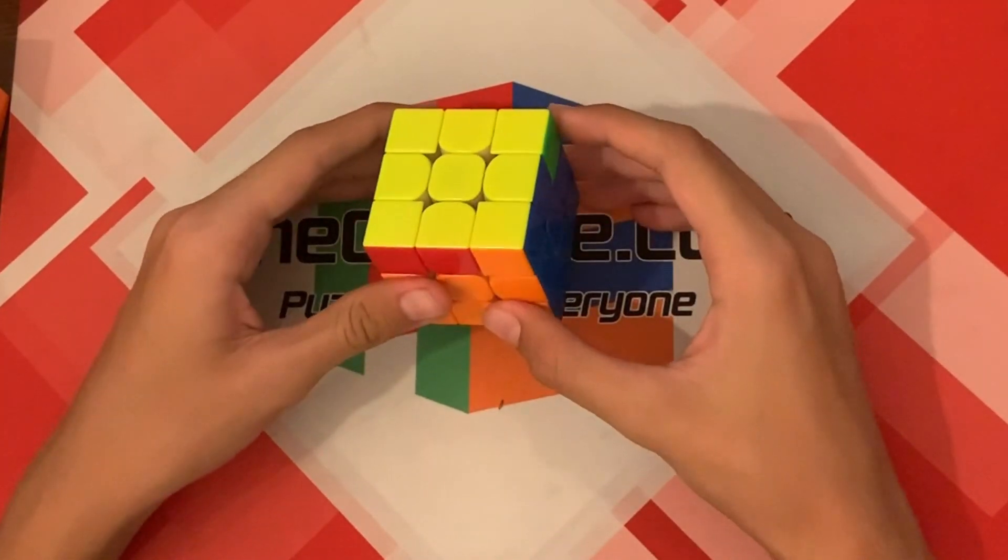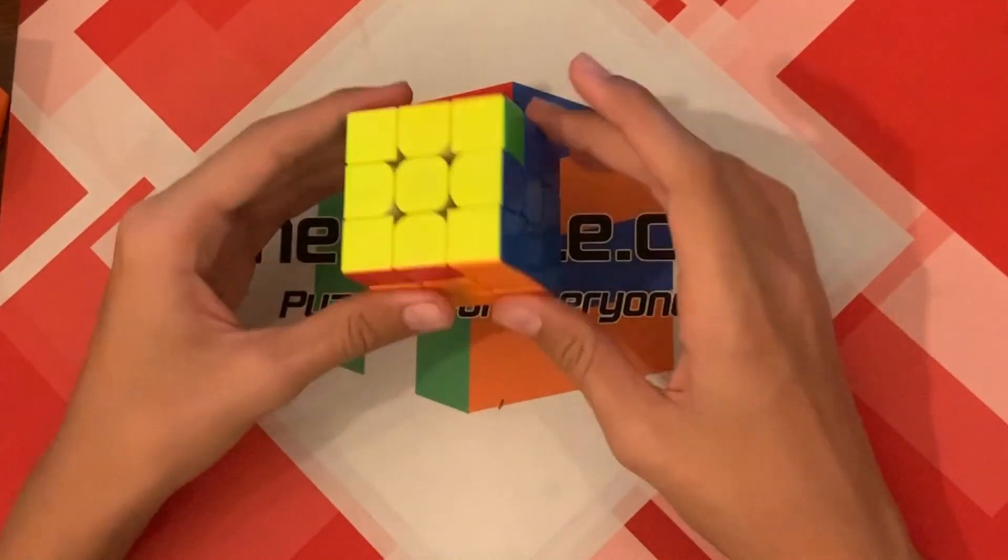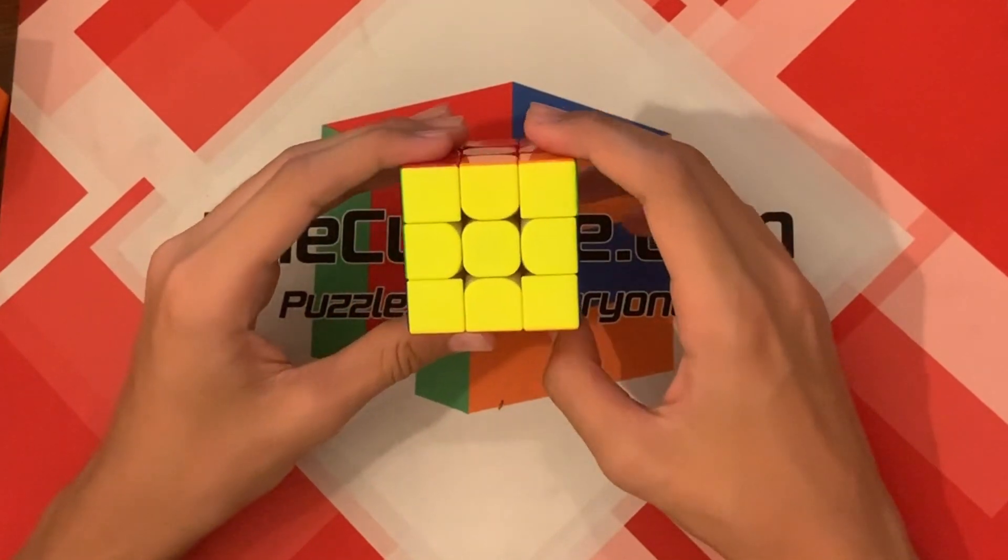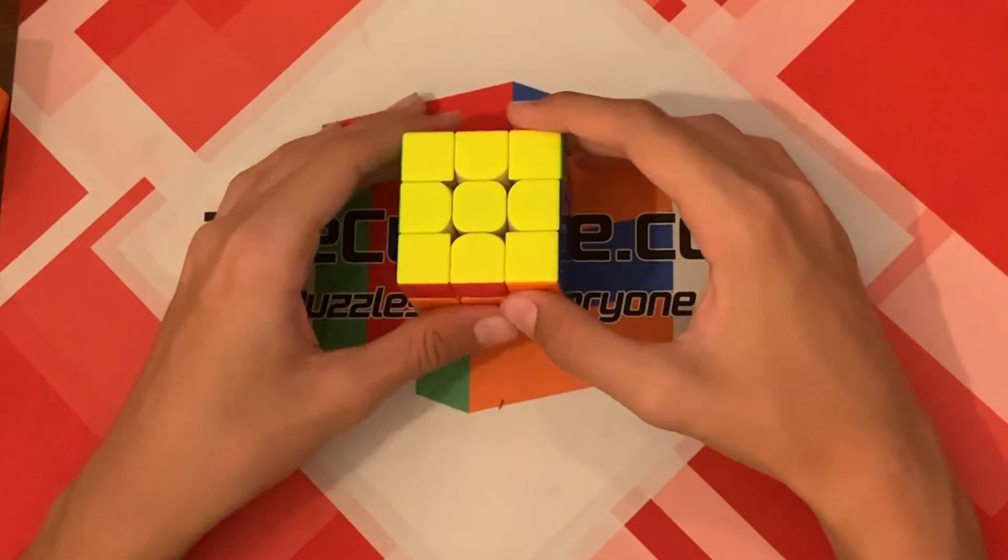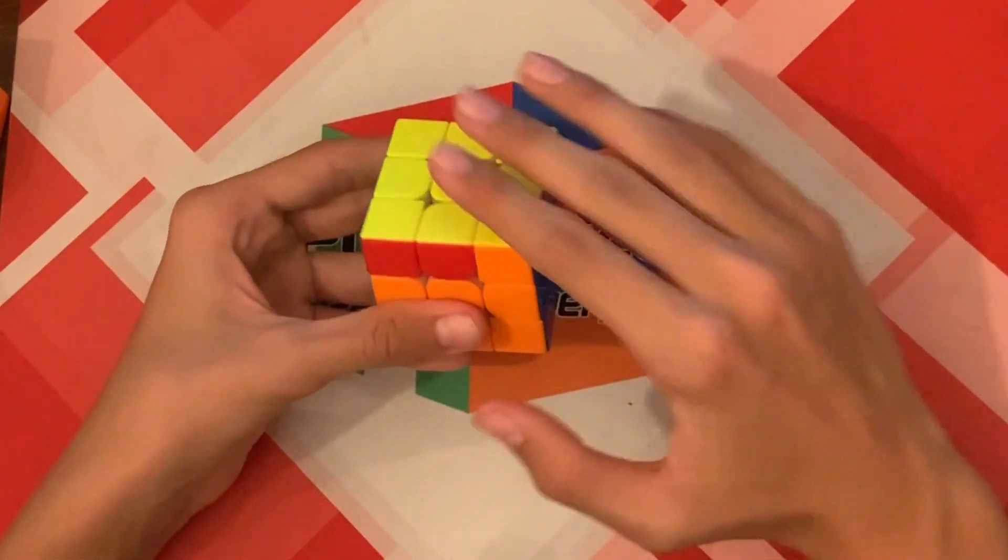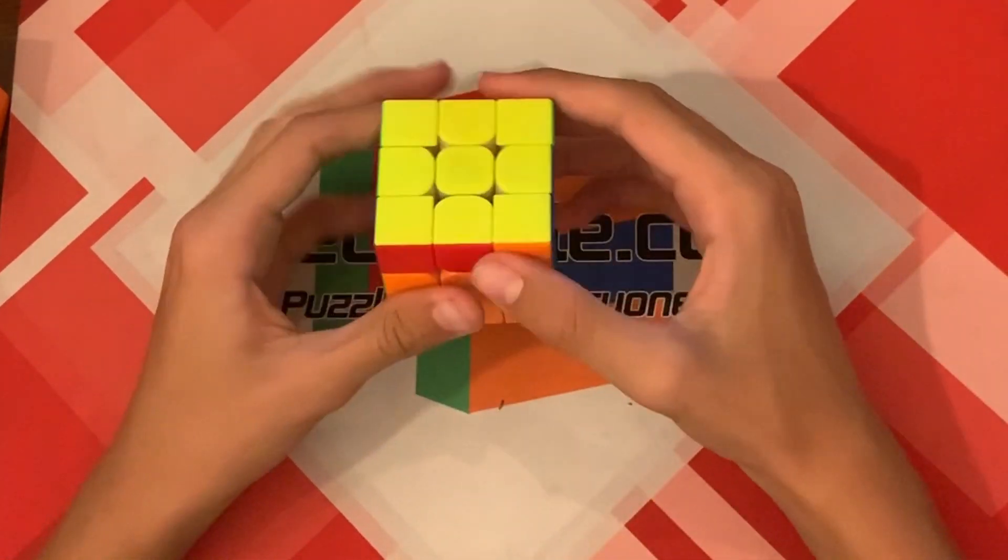Hey everyone, this is part six of how to solve the Rubik's Cube. This step is referred to as OLL, which is orienting the last layer. And what this means is we will be getting all of the yellow onto the top. So let's get started.